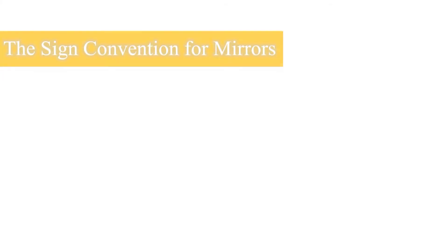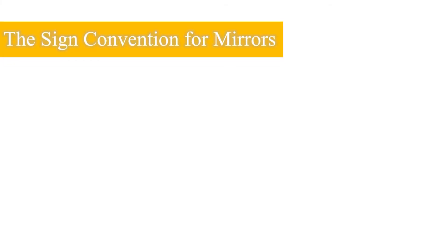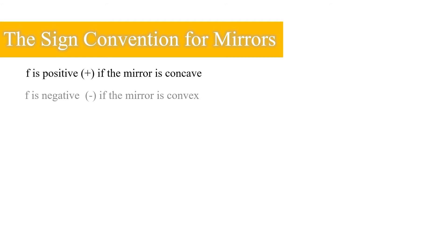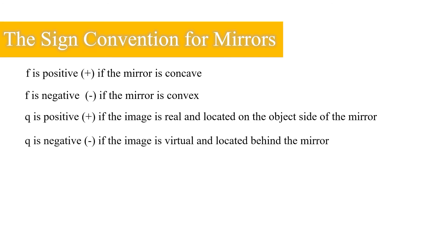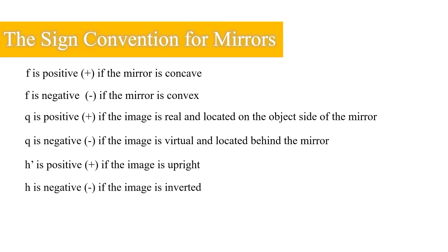It is very important that you know the sign convention for mirrors. F is positive if the mirror is concave; F is negative if the mirror is convex. DI is positive if the image is real and located on the object side of the mirror; DI is negative if the image is virtual and located behind the mirror. H is positive if the image is upright; H is negative if the image is inverted.